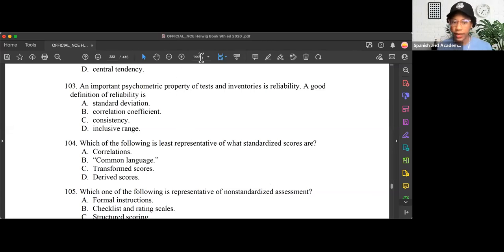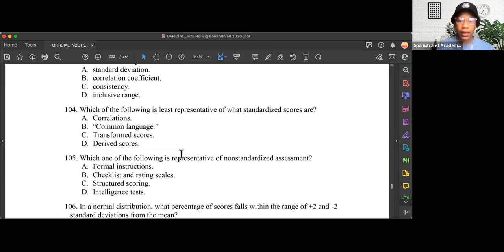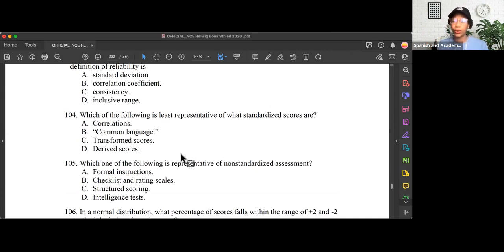I'm going to bring us to question 104 in the assessment section of the Helwig book. Because I'm working out of a PDF, my page numbers are not the same as your page numbers, so I'm refraining from giving page numbers. Which of the following is least representative of what standardized scores are? So then you need to think, what are standardized scores? Standardized scores are on the normal bell curve or normal distribution. The scores are also known as Z scores and T scores.